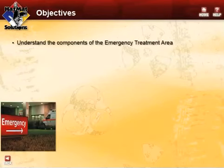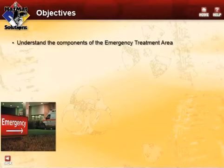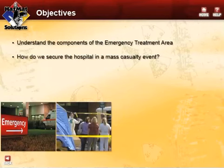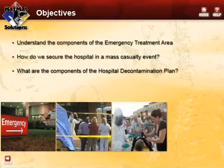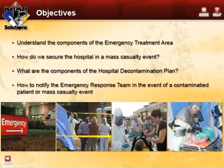In this module, we will discuss the components of the emergency treatment area. This will help the HAZMAT awareness level trained person to know which areas to avoid to minimize any potential exposure to a hazardous material in the decontamination area. Key questions will cover: How do we secure the hospital in a mass casualty event? What are the components of the hospital decontamination plan? And how do personnel notify the emergency response team in the event of a contaminated patient or mass casualty event?